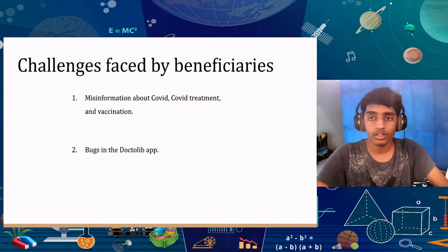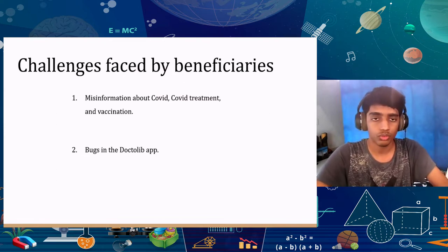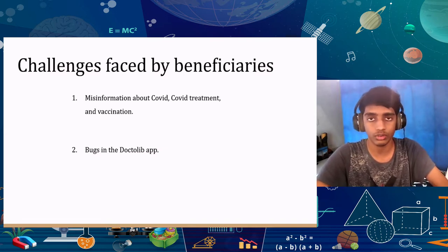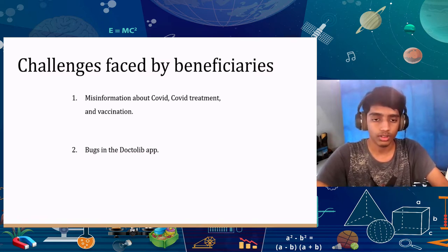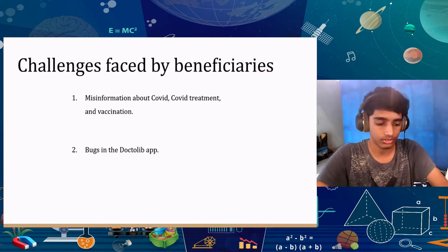There were also other challenges faced by beneficiaries. Apps such as WhatsApp and Facebook were used to spread misinformation about COVID, COVID treatment, and COVID vaccination, allowing many people to fall for scams. There were also bugs in apps such as Dr. Lib that hindered user experience.